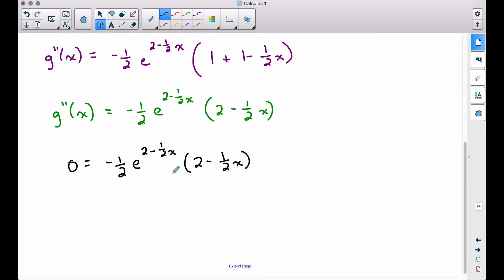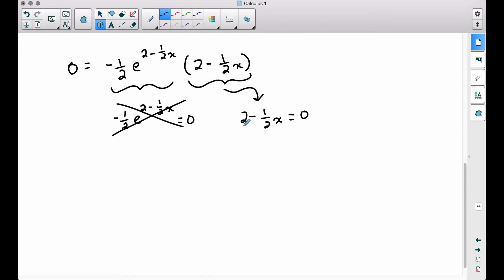Setting this second derivative equal to 0, since we have a product of two factors, we can set each factor equal to 0. And when we set this factor here equal to 0, this is impossible. Negative 1 half times e to any power will never equal 0, because it's impossible for e to any power, whether it be positive or negative, e to any power will never equal 0. So therefore, there's no need to worry about that one right there. However, there's a different story for this one over here. Let's multiply everything by 2 to get rid of our denominator. So we have 4 minus x equals 0. We still get 0 over here when we multiply by 2. And let's just move this x over here to this side by adding. So therefore, we have 4 equals x.